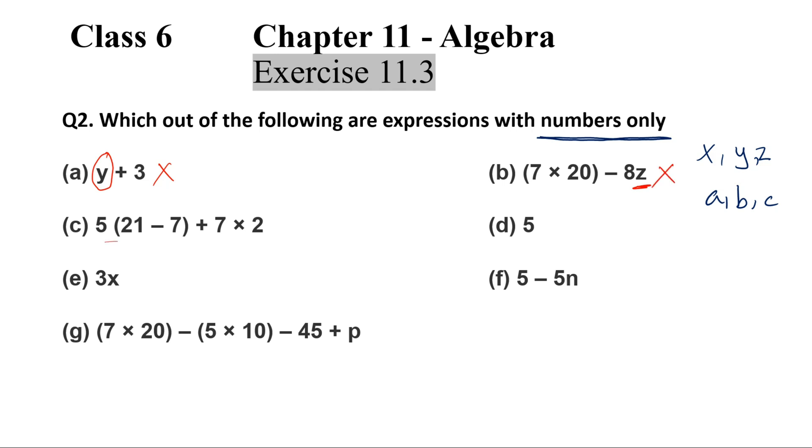Third one, all numbers, no variables. So this is correct. D has only number that is 5. So this is also correct.